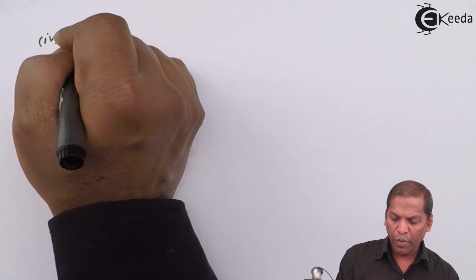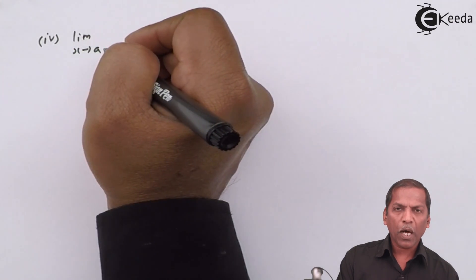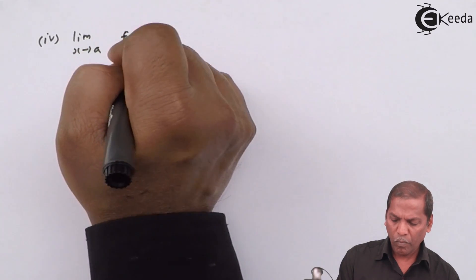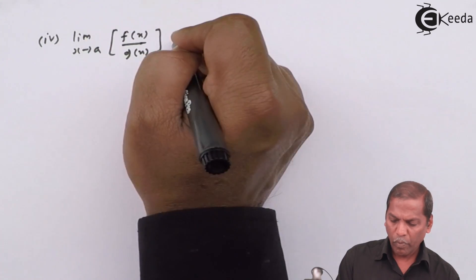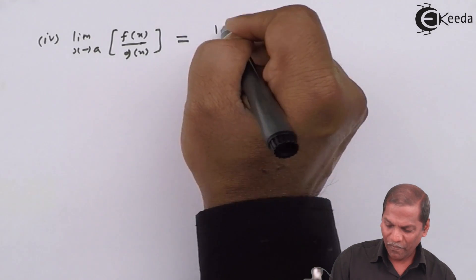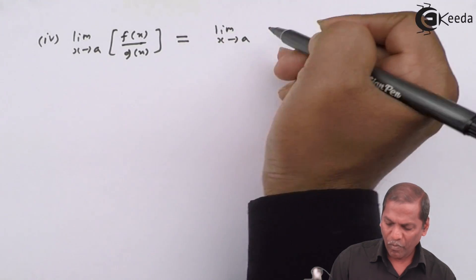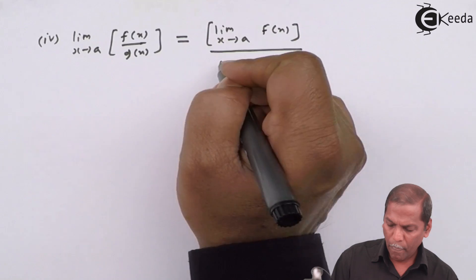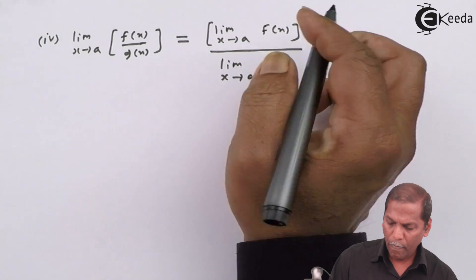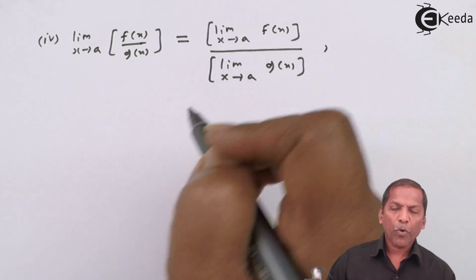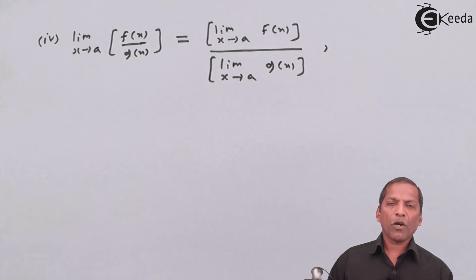Number 4: limit x tends to a f upon g, that equal to limit x tends to a f upon limit x tends to a g, provided the function g of x is not equal to 0.